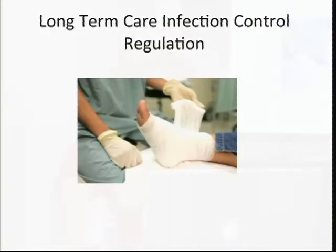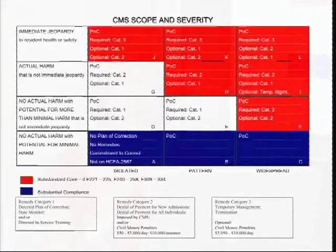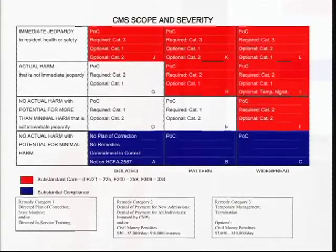We also watch dressing changes for pressure ulcers or whatever kind of wound care you might have, to see that staff are using current standards. Infections in a wound will increase your scope or severity. I've included CMS's scope and severity guide so you can take a look at that grid yourself — we use this on every survey to determine where we're at on that grid. Any infection that was avoidable or preventable will increase your severity on this grid. There'll be a copy on the website so you'll be able to pull it off with your handouts.